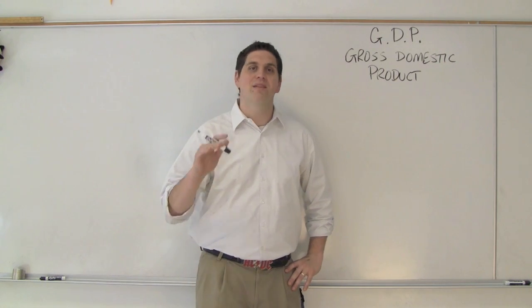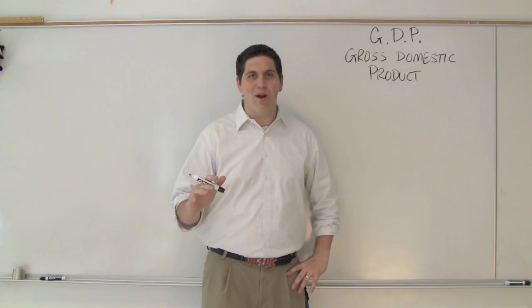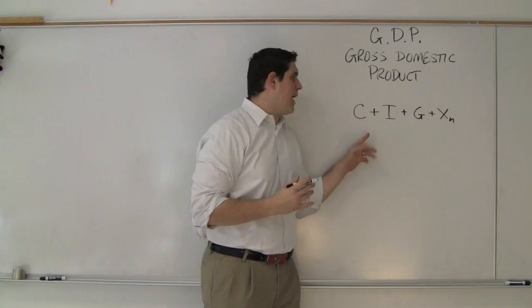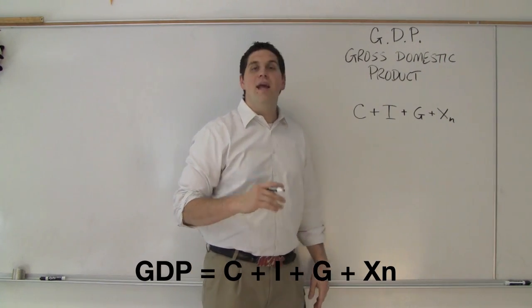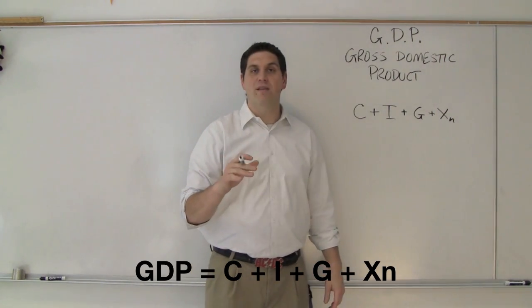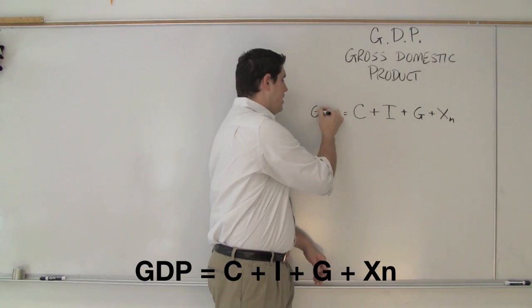GDP is made up of four components. It's the most important equation. You've got to memorize it. It's right here. That's it. It's C plus I plus G plus XM. This equals GDP.